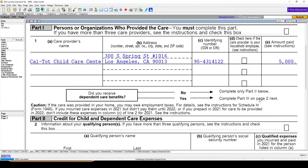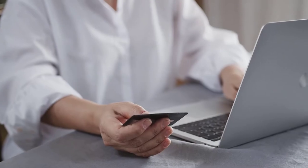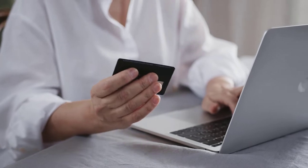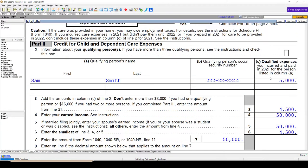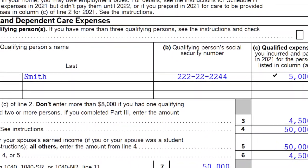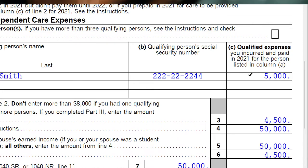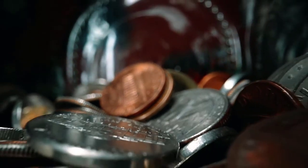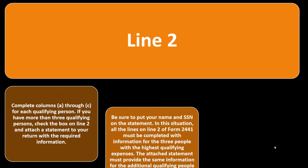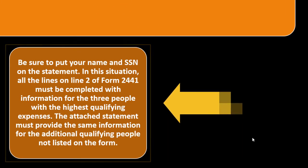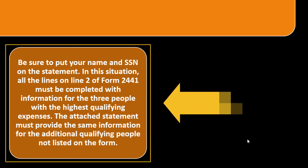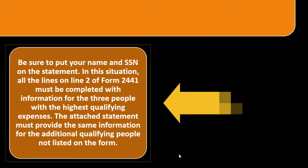You may have paid multiple institutions listed at the top of the form, and down below you can have one or more persons the expenses were paid for — two sides of the same coin. Be sure to include your name and SSN on any attached statement. All lines on line 2 of Form 2441 must be completed for the three people with the highest qualifying expenses. An attached statement must provide the same information for any additional qualifying people.